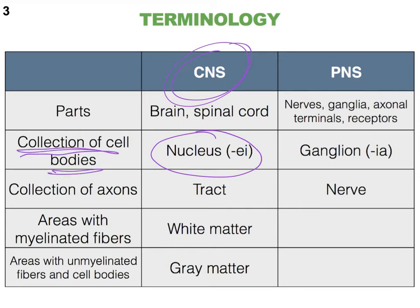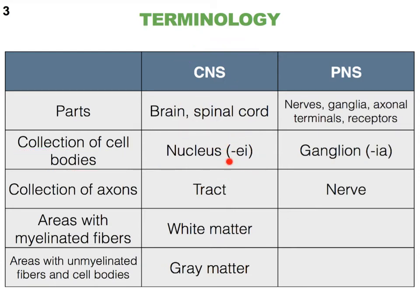A collection of cell bodies inside of the CNS we refer to as a nucleus. Now when we go outside of the CNS — in the peripheral nervous system — we call it a ganglion. Nucleus becomes nuclei; ganglion becomes ganglia. If we look at a bunch of axons together in the peripheral nervous system, we call it a nerve.